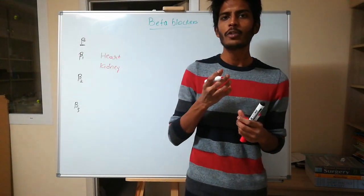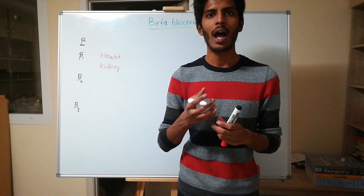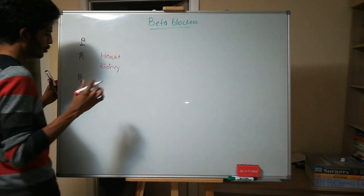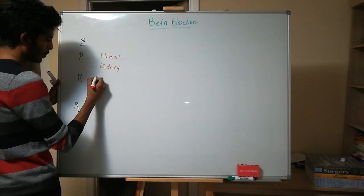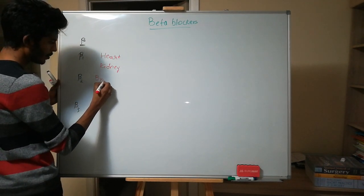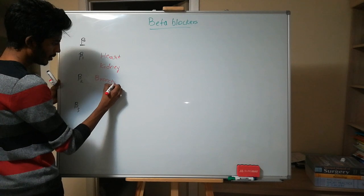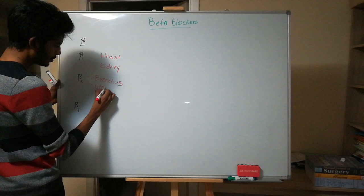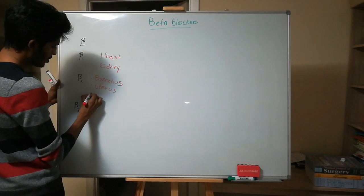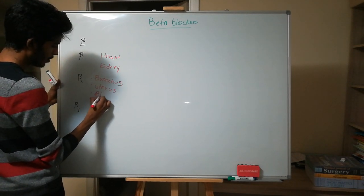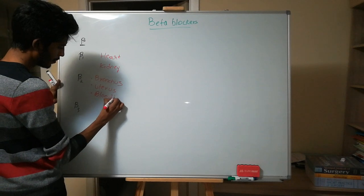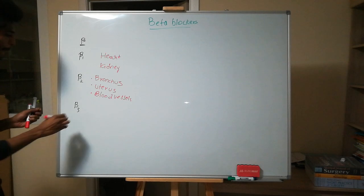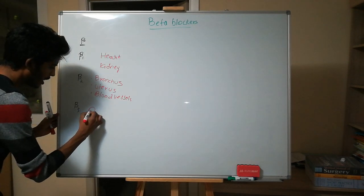Beta 2 receptors are generally located in smooth muscles — that's how I remember it. The locations include bronchus, uterus, and blood vessels. Those are the locations for the beta 2 receptor. Beta 3 receptors are located in the adipose tissue.